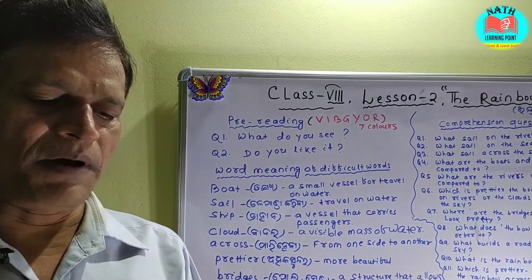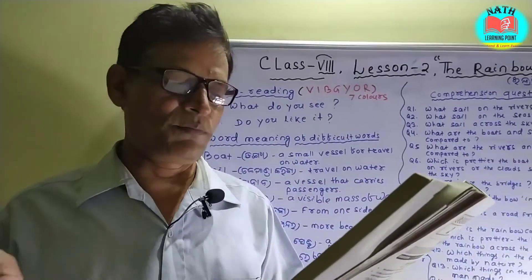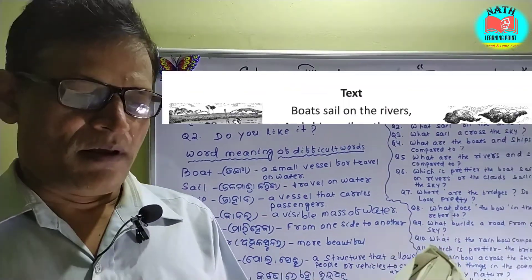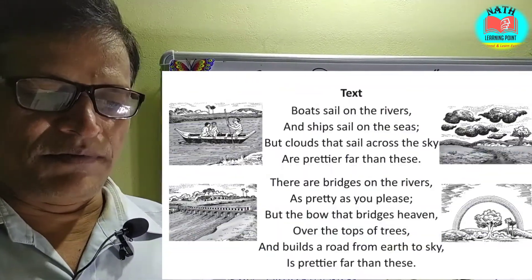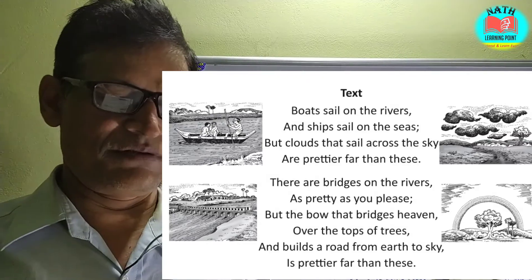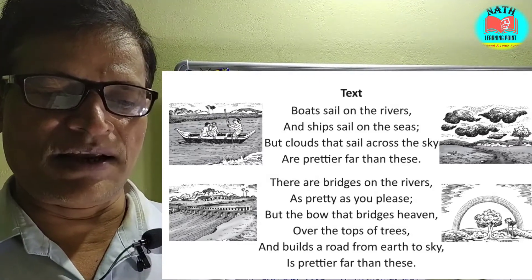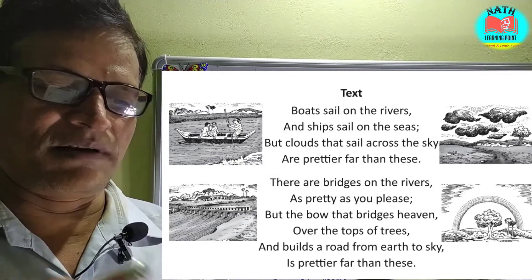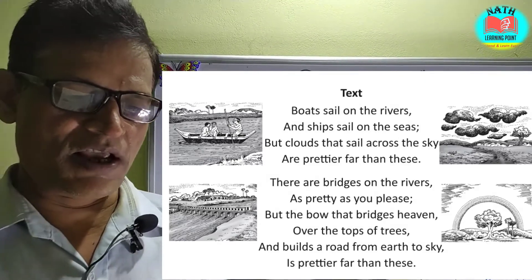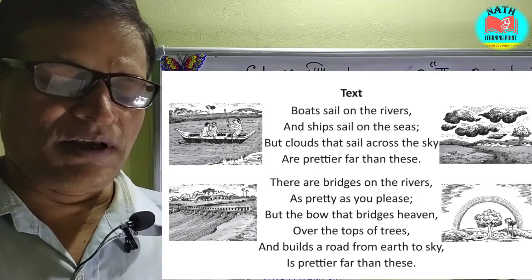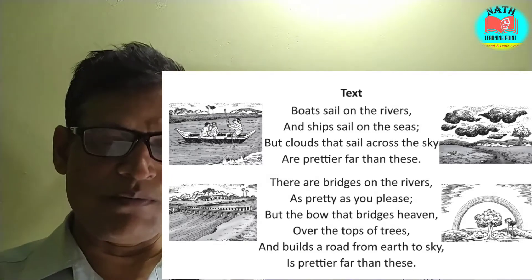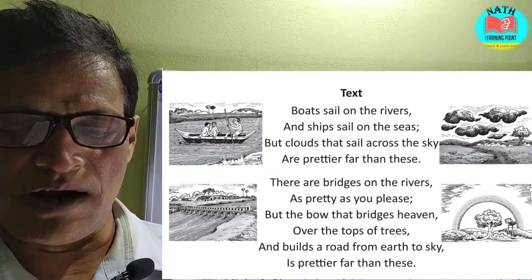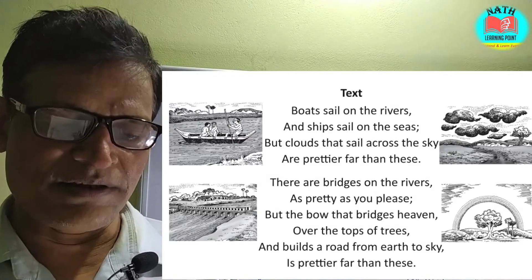Is prettier far than these. Second time, you open your book and follow me. Boats sail on the rivers and ships sail on the seas, but clouds that sail across the sky are prettier far than these. There are bridges on the rivers as pretty as you please, but the bow that bridges heaven over the tops of trees and builds a road from earth to sky is prettier far than this.